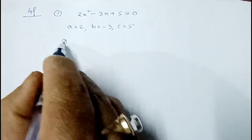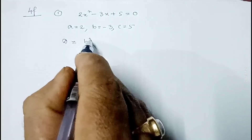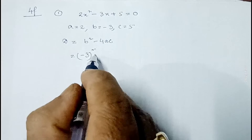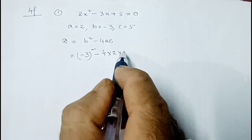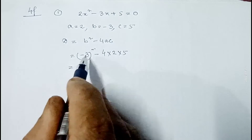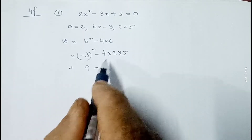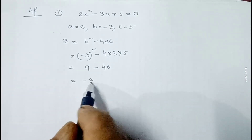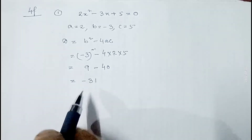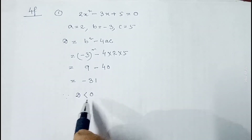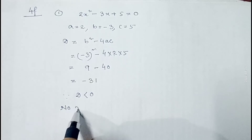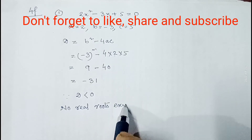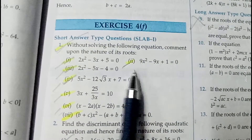Now we know discriminant D = b² - 4ac. Here b = -3, so it will be (-3)² - 4×2×5 = 9 - 40 = -31. Since D < 0, no real roots exist, and that's the answer.